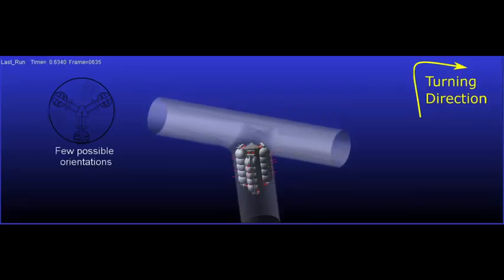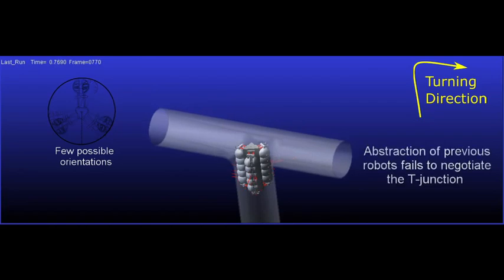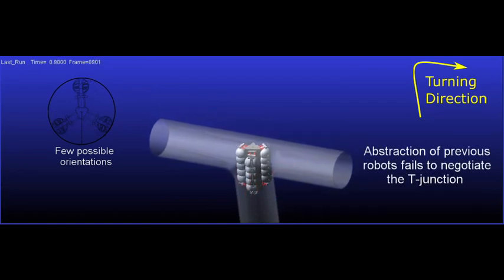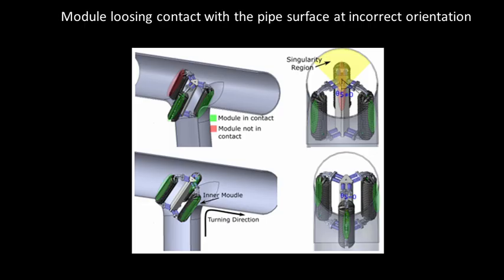But the robot with this configuration cannot negotiate T-junction every time as shown in the abstraction of one such robot. Sometimes the orientation of the robot while turning in T-junction is such that one of the modules loses contact with the pipe surface. This was termed as motion singularity in earlier research works.